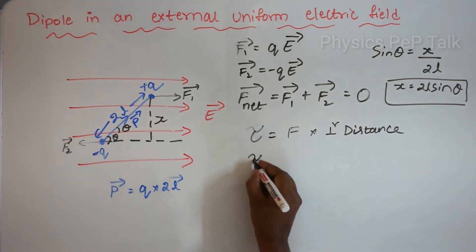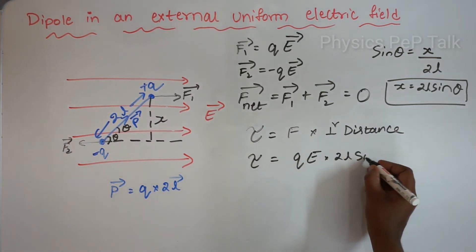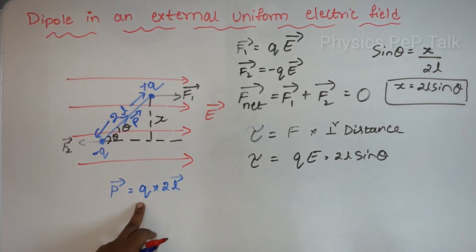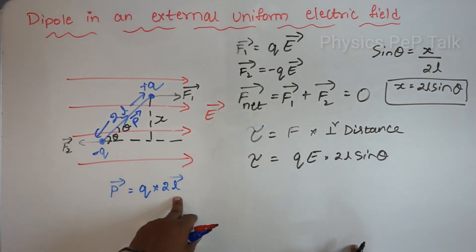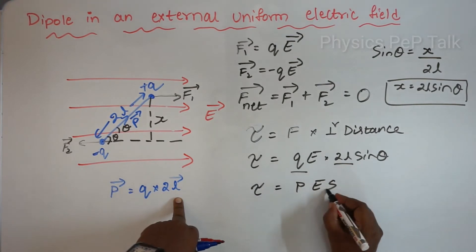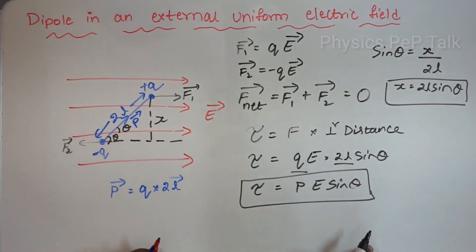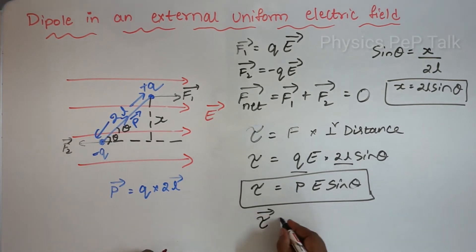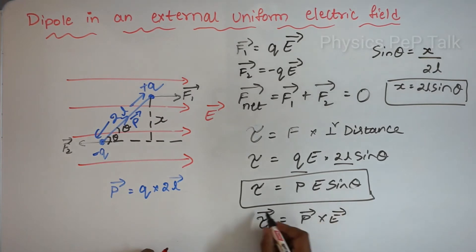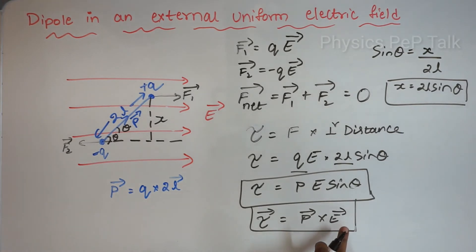Torque equals magnitude of force times perpendicular distance, which is qE times 2l sin theta. Since dipole moment p equals q times 2l, the torque becomes p·E·sin theta. This is the torque acting on the dipole when placed in an external uniform electric field. In vector form, torque tau equals p cross E.